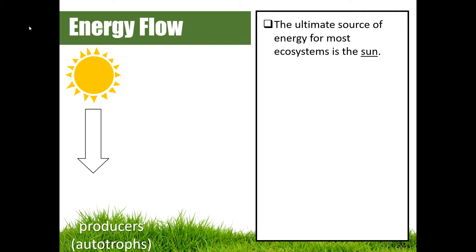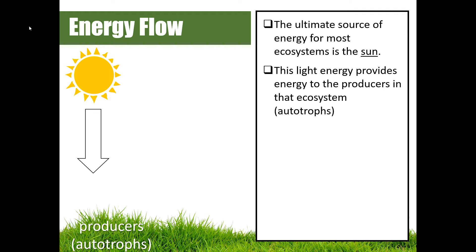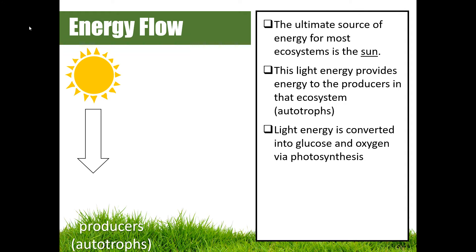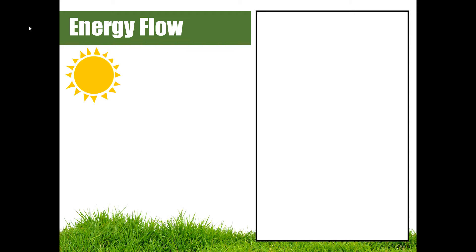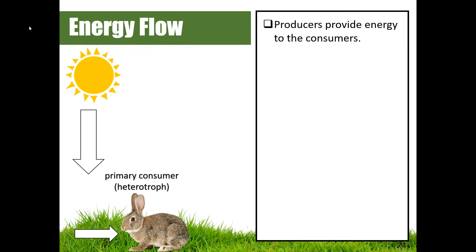We know that the ultimate source of energy for most ecosystems is the sun, and that sun is going to provide light energy to our producers in the ecosystem. We call these producers autotrophs because they make their own food. That light energy is going to be converted into glucose and oxygen through the process of photosynthesis. The glucose created during photosynthesis is stored in the biomolecules of the organism — carbs, lipids, and proteins — and will be available to consumers that eat that organism.